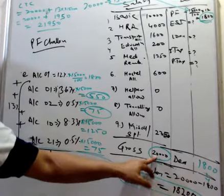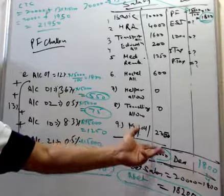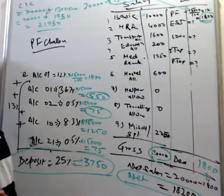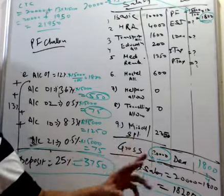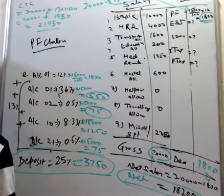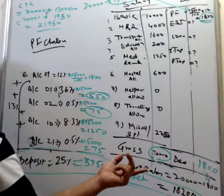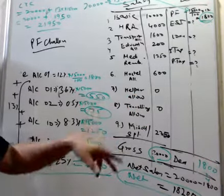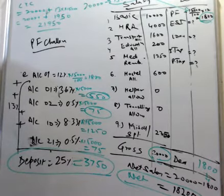This is how we calculate the provident fund in this way. If this is sixteen thousand, then we get fifteen thousand. If this is twelve thousand, then we get twelve thousand. If the salary is already going to forty thousand and basic twenty thousand, it will be on fifteen thousand only, because the CTC will increase your contribution if you cut more.